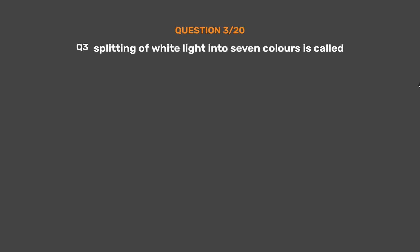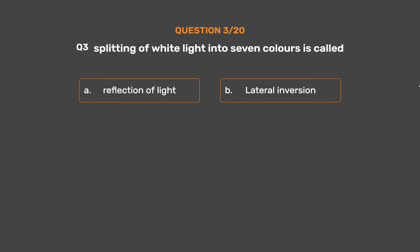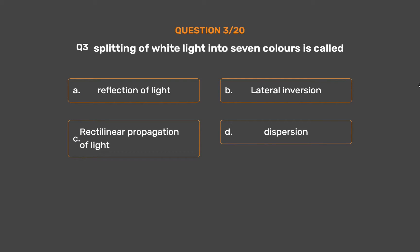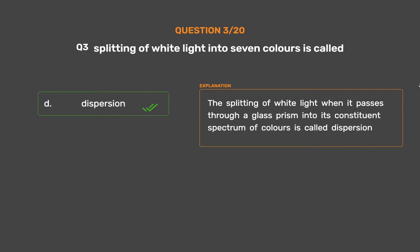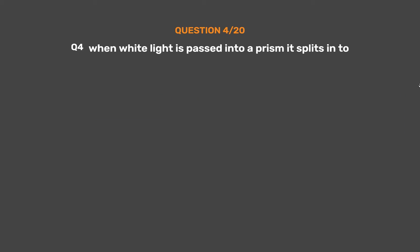Question number 3. Splitting of white light into 7 colors is called: option A, reflection of light; option B, lateral inversion; option C, rectilinear propagation of light; option D, dispersion. The correct answer is option D, dispersion. The splitting of white light when it passes through a glass prism into its constituent spectrum of colors is called dispersion.